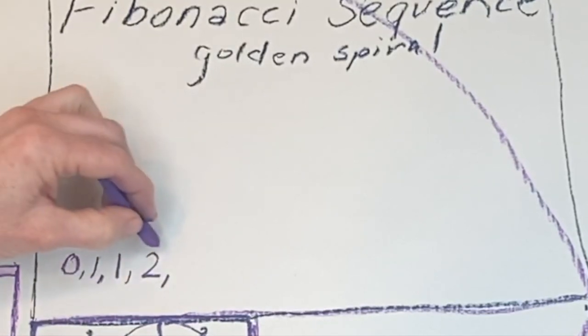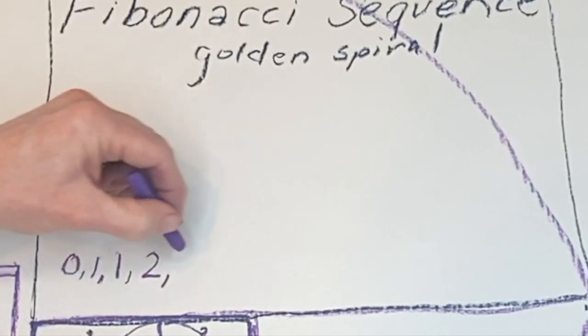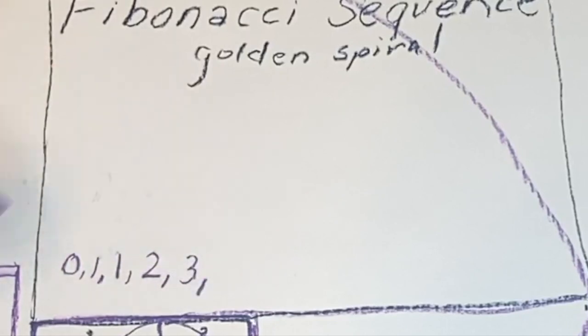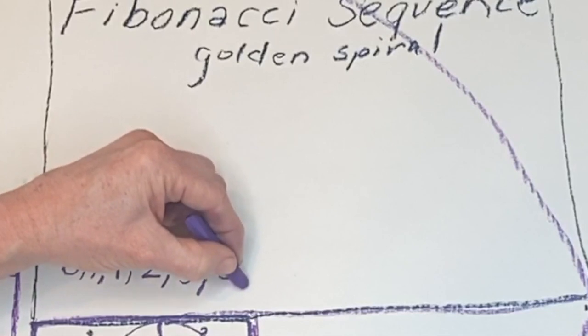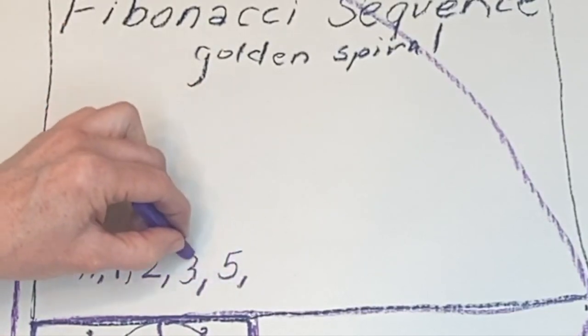One and one equals two. Two and one equals three. Three and two equals five. And this pattern can continue to infinity.